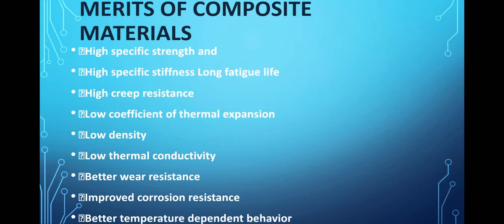The advantages of composite materials are: high specific strength, high stiffness, high creep resistance, low coefficient of thermal expansion, low density, low thermal conductivity, better wear resistance, corrosion resistance, and better temperature-dependent behavior. Composite materials have high load-absorbing capacity, low thermal expansion, do not allow heat to pass through easily, resist wear, and have very low susceptibility to corrosion.